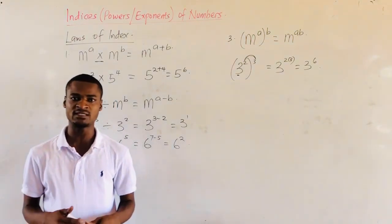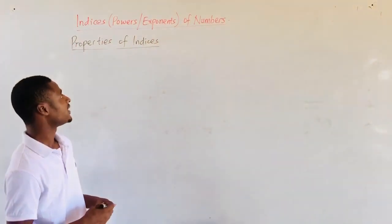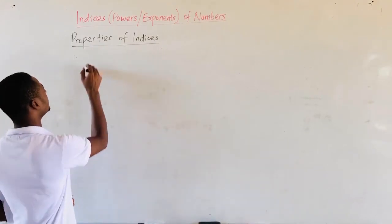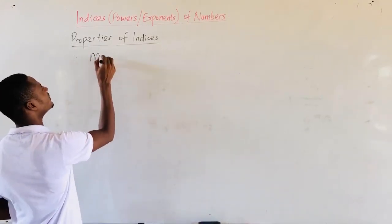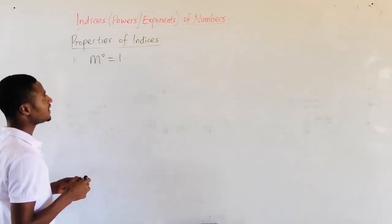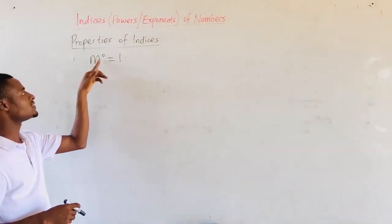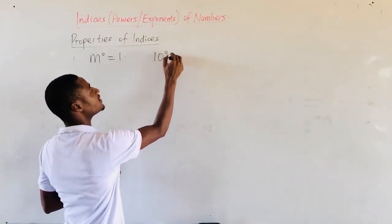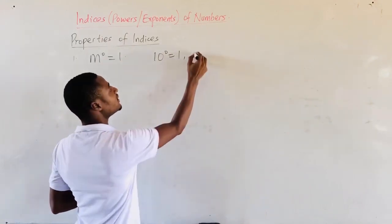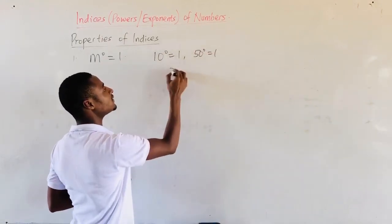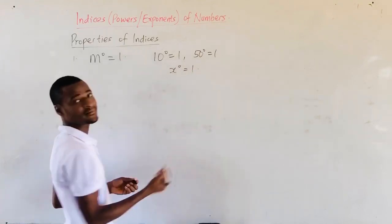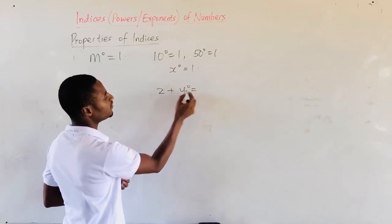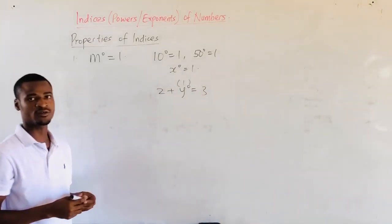Let's look at the properties of indices. The first property states that any number raised to the power 0 is equal to 1. So, 10 raised to the power 0 is 1, 50 raised to the power 0 is 1, and X raised to the power 0 is 1. If you are given 2 plus Y raised to the power 0, then your answer should be 1, because any expression raised to the power 0 is 1.